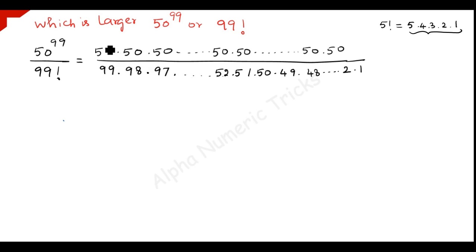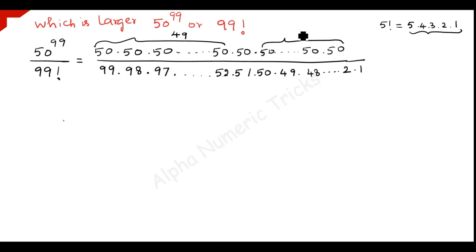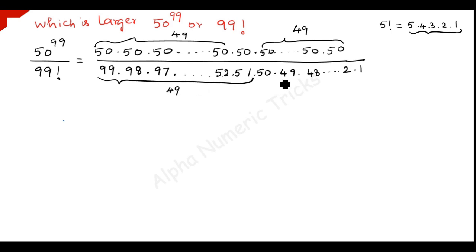So here we take the 99 candidates. First take the first 49 terms, then the next 49 terms. So 49 plus 49 is 98 terms, and 50 is left over. In the denominator, from 99 to 51 you have 49 terms, and from 1 to 49 you have 49 terms, with 50 as the middle term for both numerator and denominator.